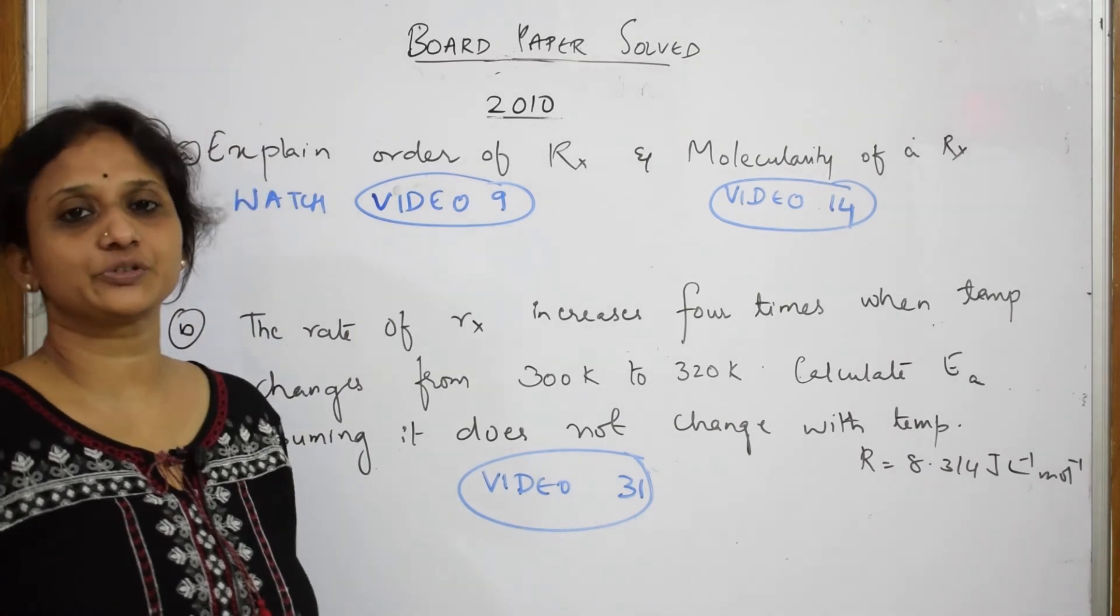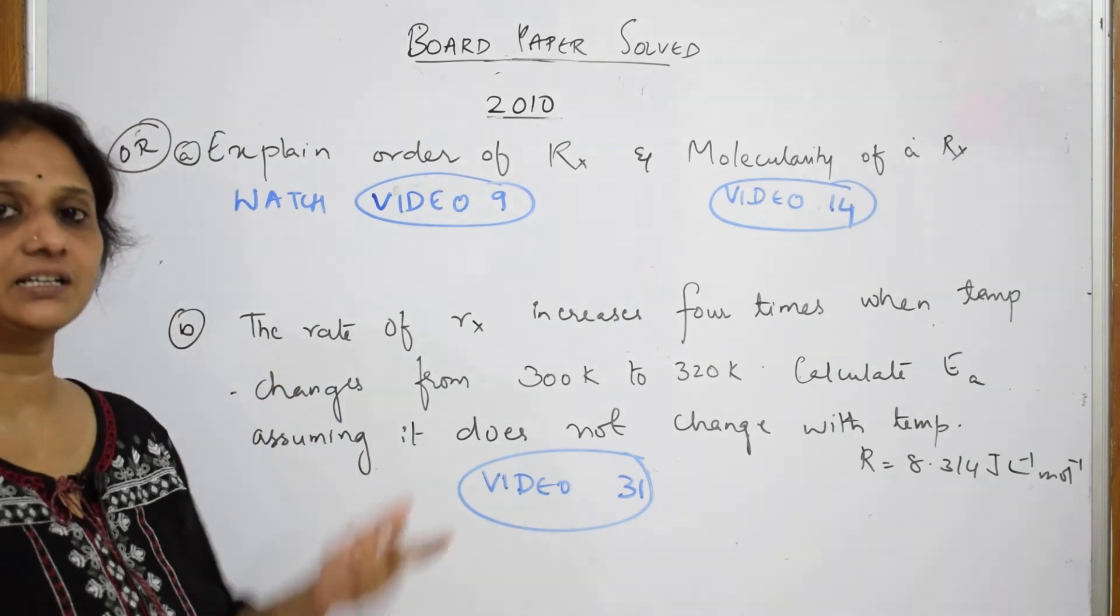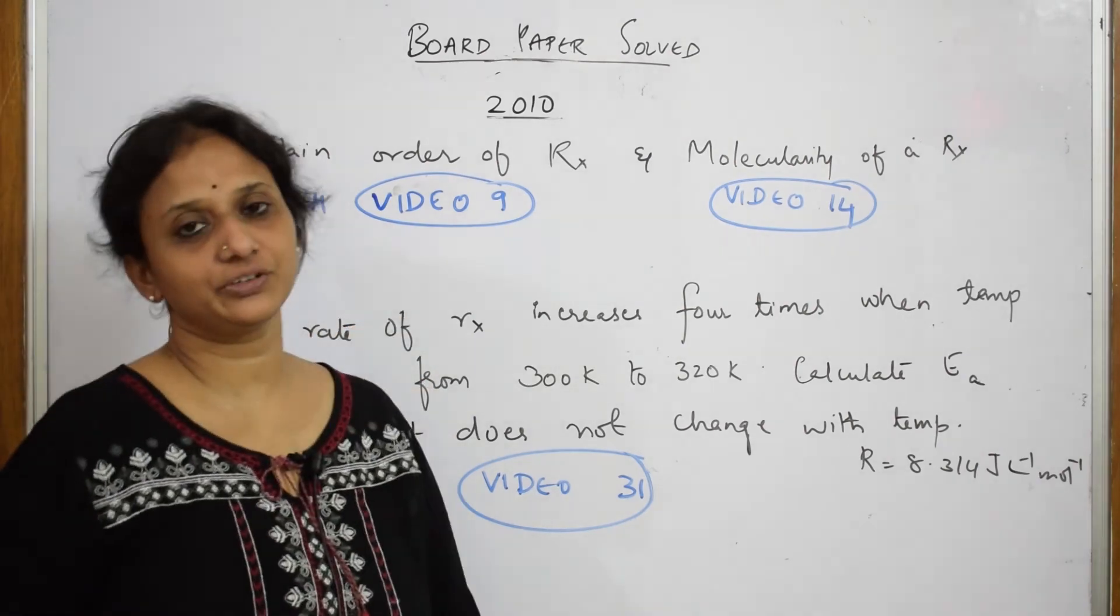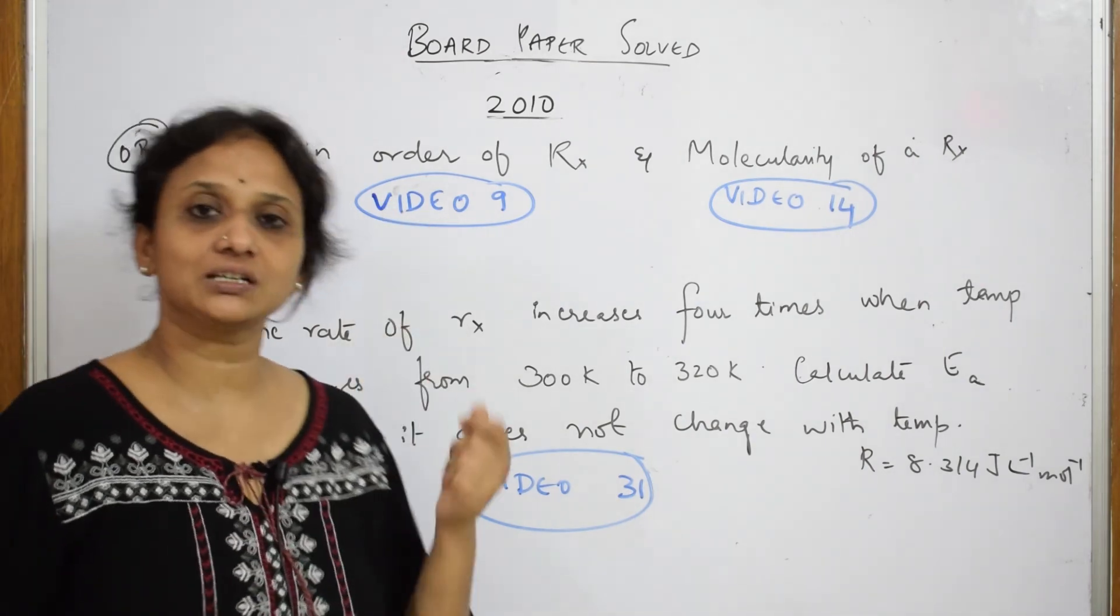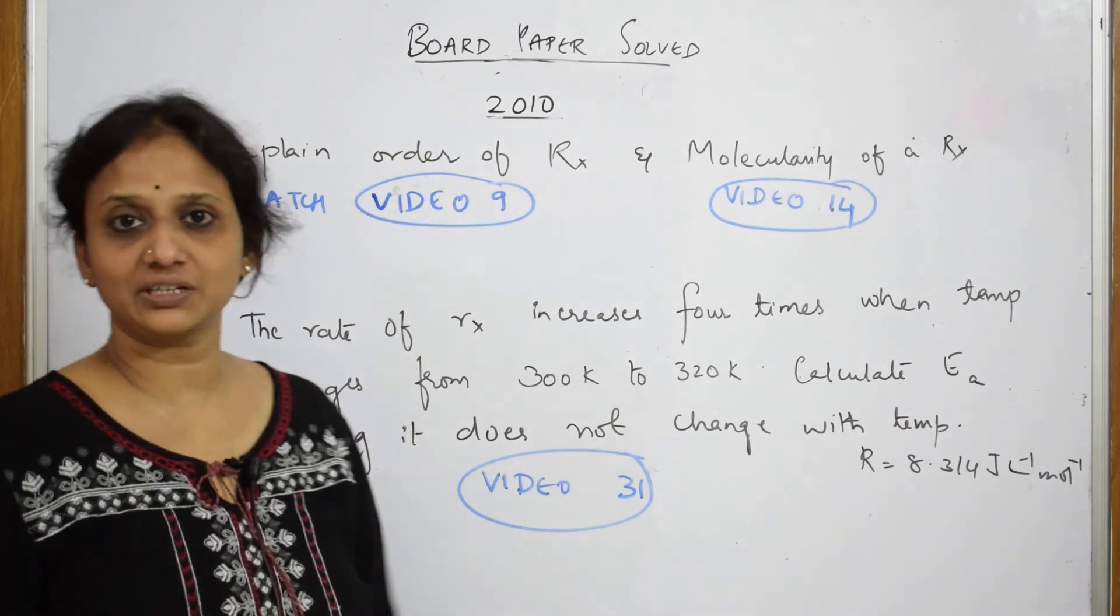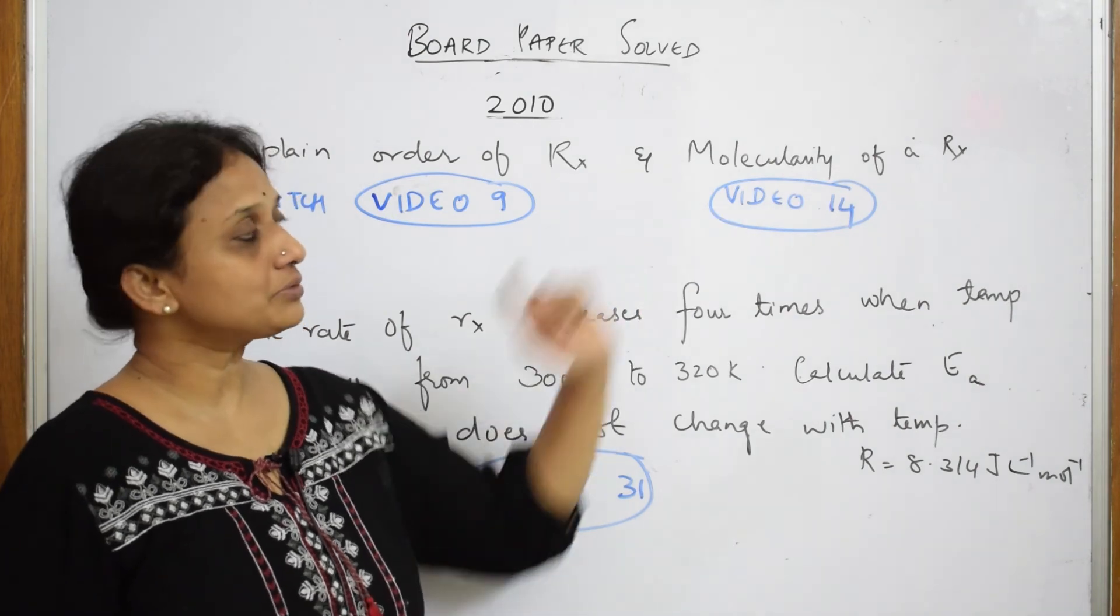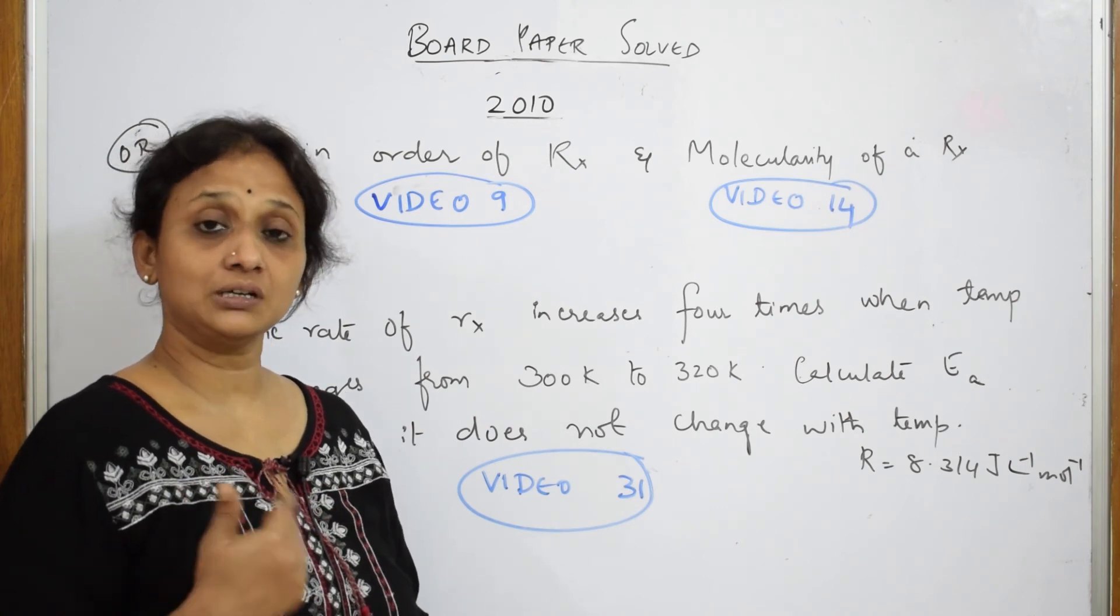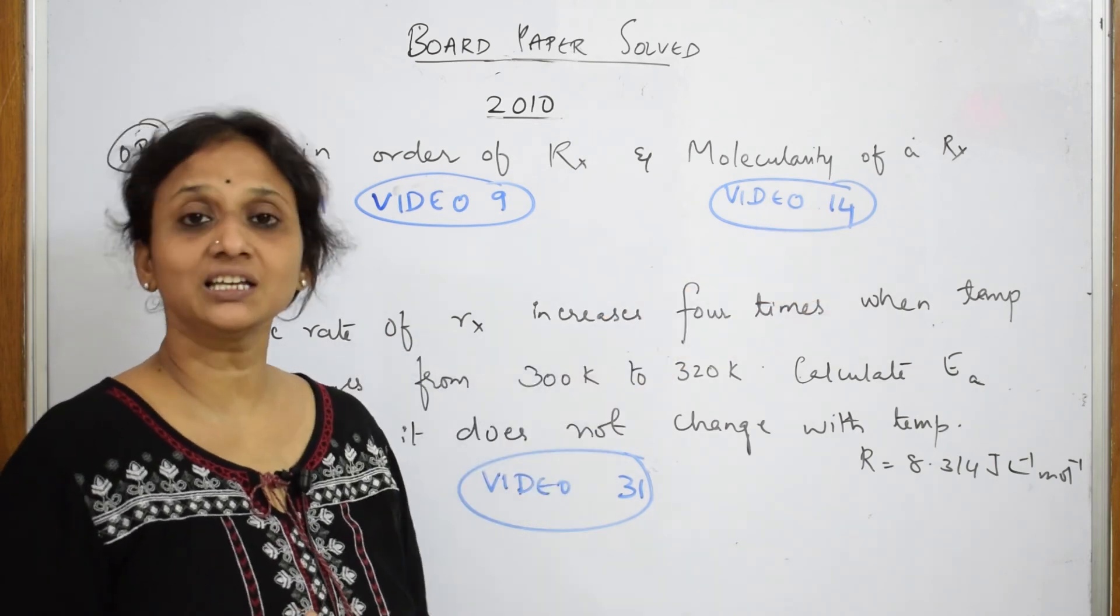Let us do the next question of your 2010 paper. This is basically your choice question. The question which I've done was the first question where it had two sub-parts. Let us do this question. Let us read: explain order of a reaction, molecularity of a reaction. So basically I've already done a video on this. This is under, go to the playlist of chemical kinetics. Under that playlist, watch the video number 9. You have the order of the reaction. I also gave an example how to calculate order of a reaction. When we come to molecularity of a reaction, I also did. I picked up types of molecular, like unimolecular, bimolecular, termolecular reactions also. Please go to that video which is numbered as 14 in chemical kinetics playlist.